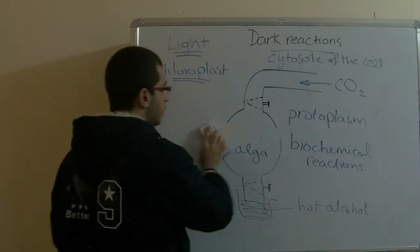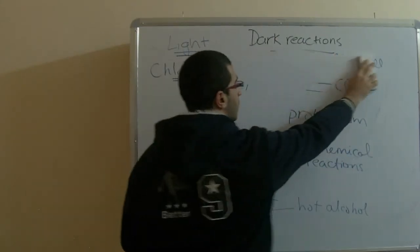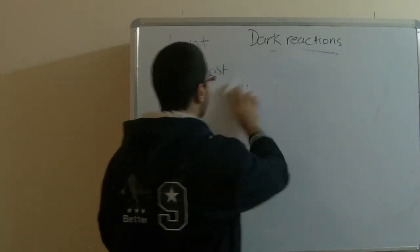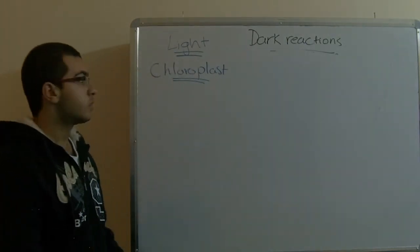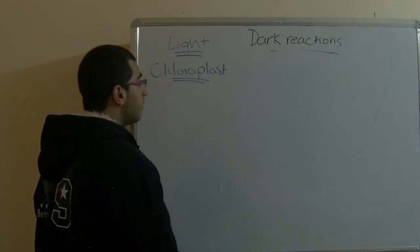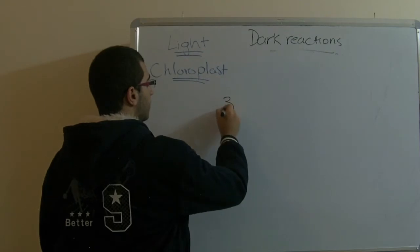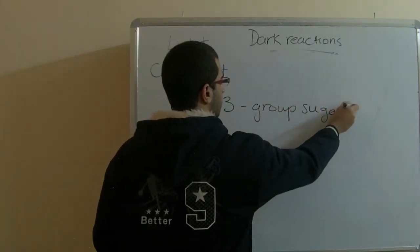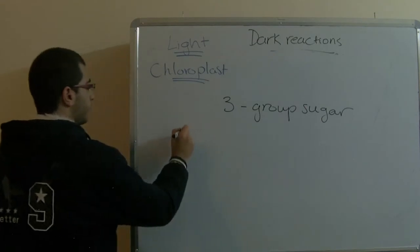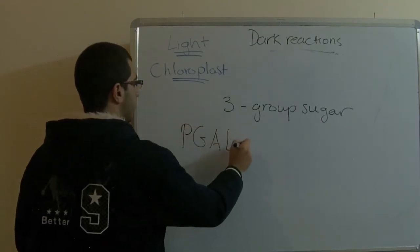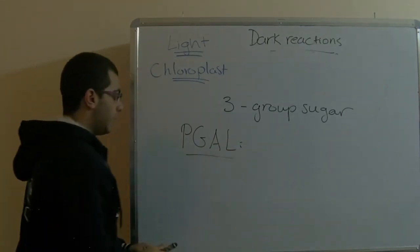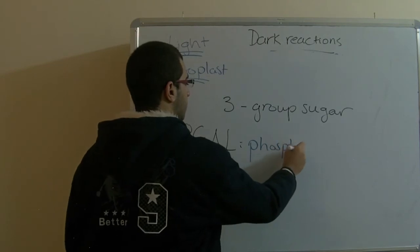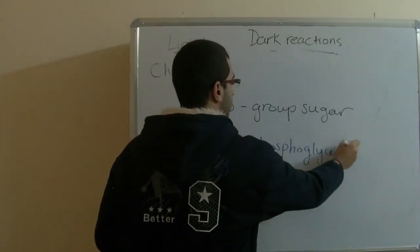Now we will mention the conclusions or results of his experiment. He found that the first produced sugar from these reactions is a three-carbon sugar, which is called PGA-L — an abbreviation for the long name Phosphoglyceraldehyde.